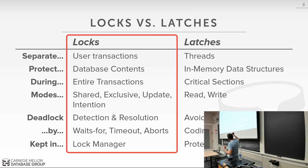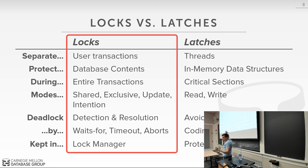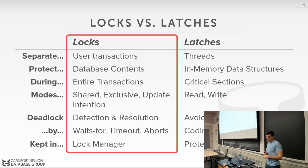The key distinction between locks and latches is the deadlock piece. In the latching protocol, we had to be very careful about acquisition order because there was no background thread to save us from deadlocks — we acquired latches always in one direction. With database locks, we can't enforce that ordering because we don't know what transactions are going to do ahead of time. So we can end up with deadlocks, and we need a way to deal with that — which is essentially what you'll be implementing for project three.